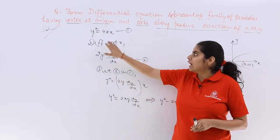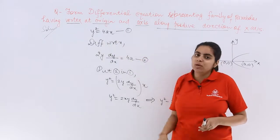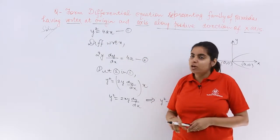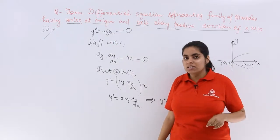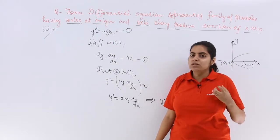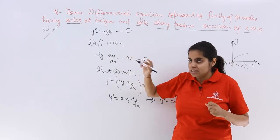As we saw, the previous question had the main equation as y squared equal to 4ax. How many arbitrary constants? Only one, which is a. So if one constant was there, what did we do? We differentiated it only once.